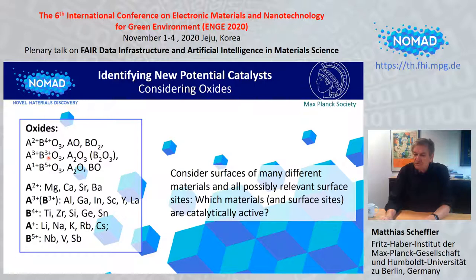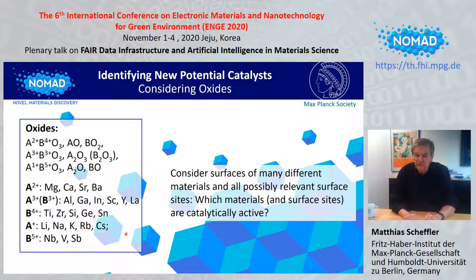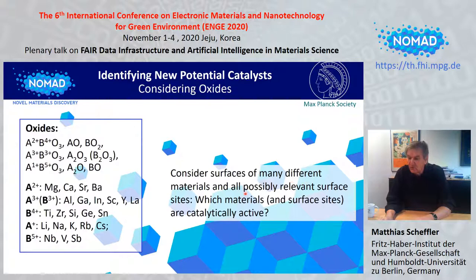We looked into this by subgroup discovery, identifying new potential catalysts, and we considered oxides because they are particularly stable and usually not poisonous. We considered binary oxides where A and B are various metals or elements. We are not only looking at bulk materials — catalysis works on surfaces, so we look at the adsorption of carbon dioxide at different surfaces and all possibly relevant surface sites, asking which material and surface site are catalytically active.